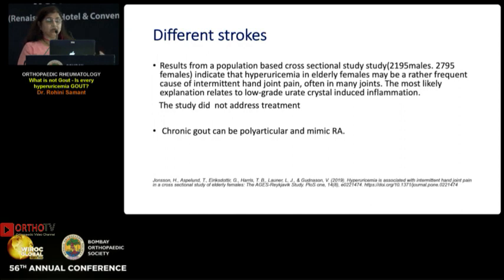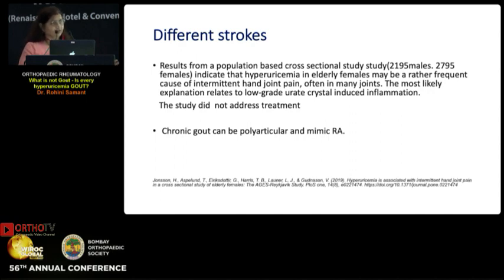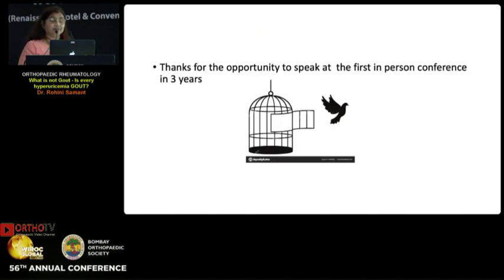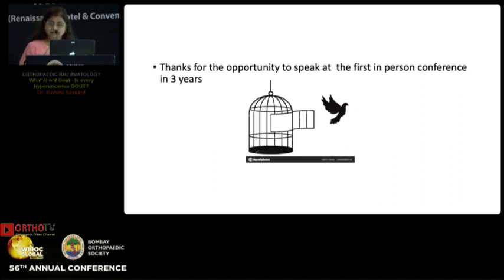A large study found that elderly females with hyperuricemia often had intermittent hand joint pain — something not entirely in consonance with what I've been saying, but worth noting. Additionally, chronic gout can mimic polyarticular rheumatoid arthritis. To summarize: asymptomatic hyperuricemia really needs no treatment. We may address some dietary advice or exercise, but nothing beyond that. Thank you for this opportunity to be in person with all of you.